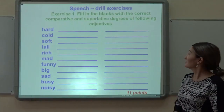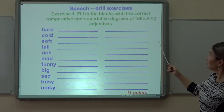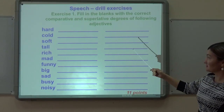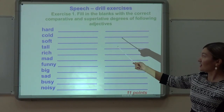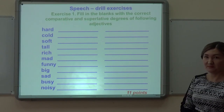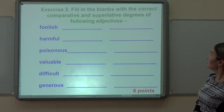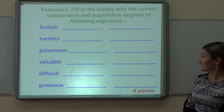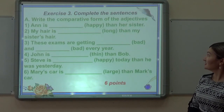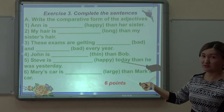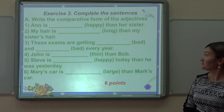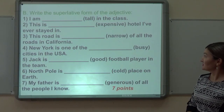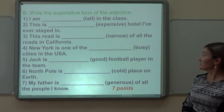Let's practice. The first exercise: fill in the blanks with the correct comparative and superlative degrees of the following adjectives. For example: hard, harder, the hardest. The next exercise also asks for comparative and superlative forms. Then, write the superlative form of adjectives — for example: I am the tallest in the class.